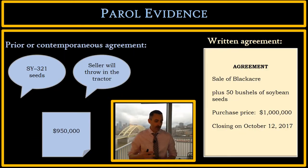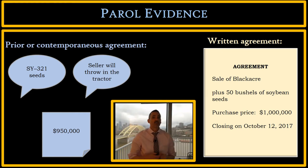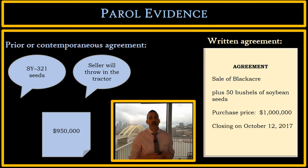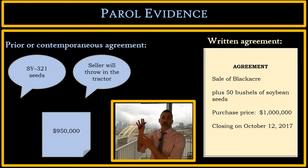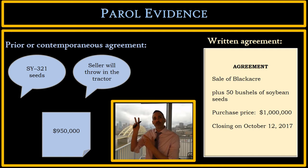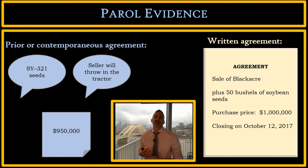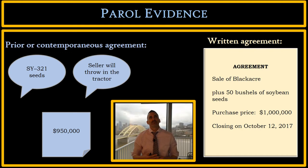Let's refresh our memory and look at our example. We have this written contract for the sale of Black Acre plus 50 bushels of soybean seeds, purchase price a million dollars. And we have two prior contemporaneous oral agreements and one prior contemporaneous written agreement — three different pieces of Parole Evidence.